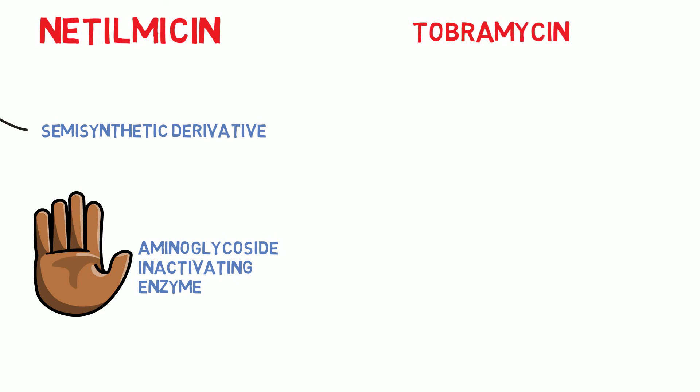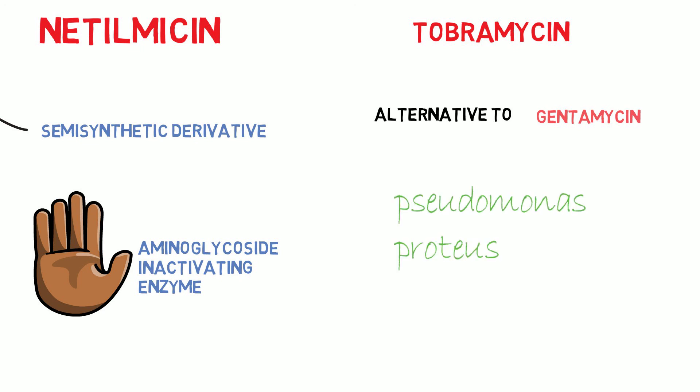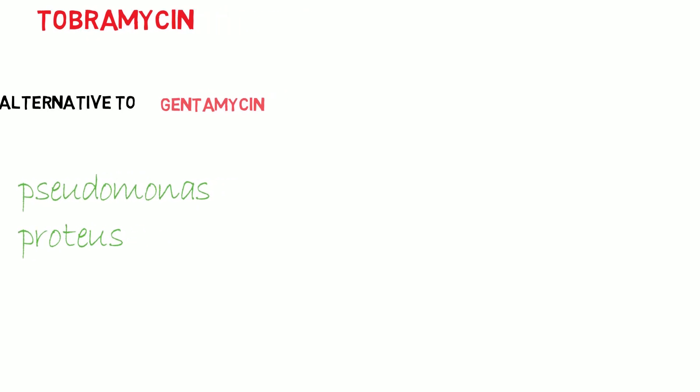Tobramycin is generally used as an alternative to gentamicin. It is effective against Pseudomonas and Proteus, including strains resistant to gentamicin.